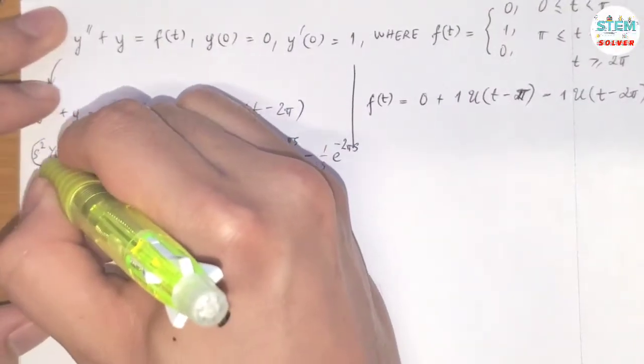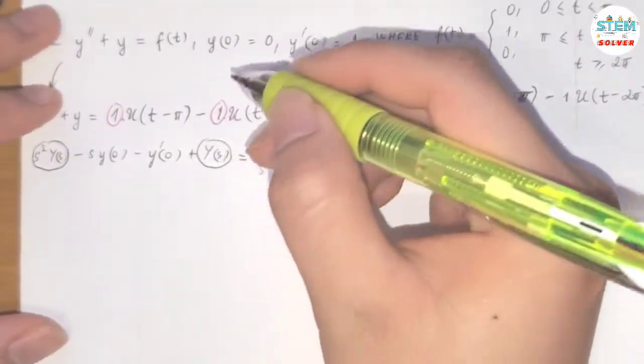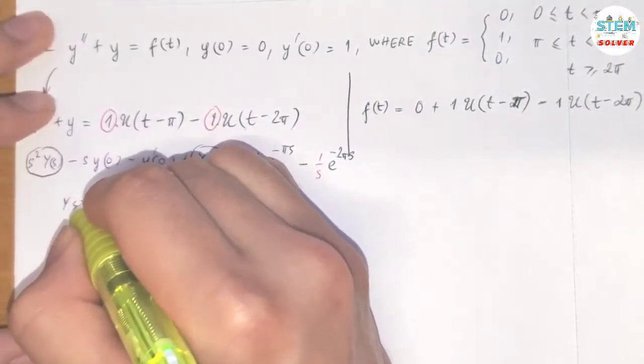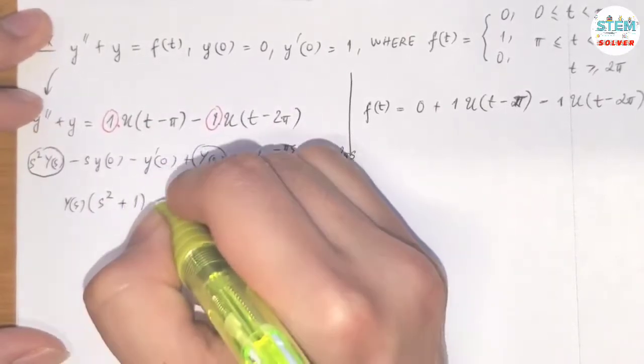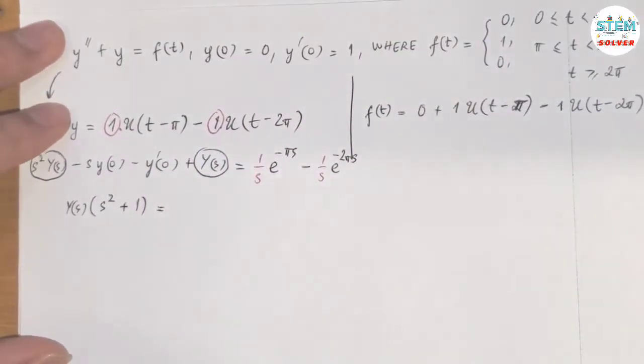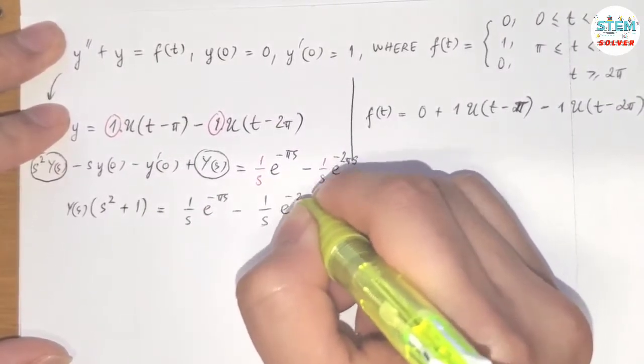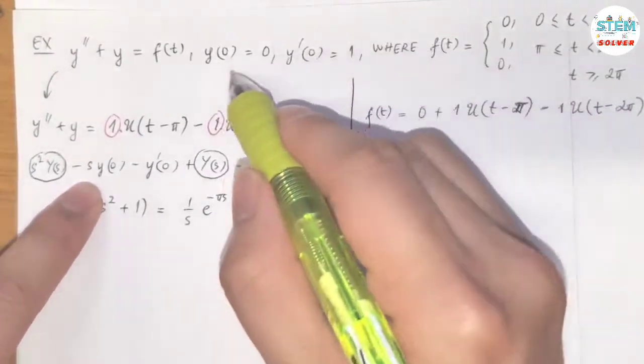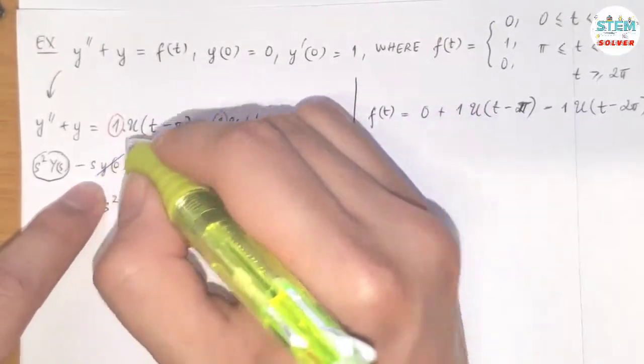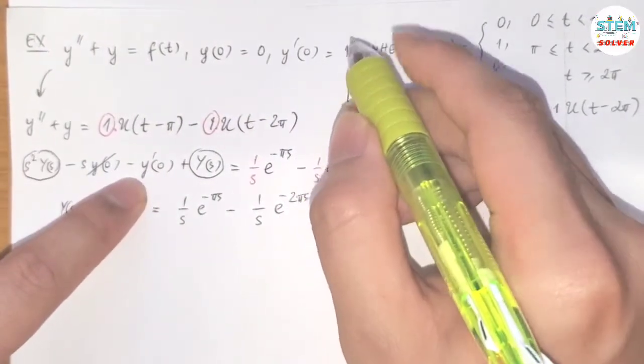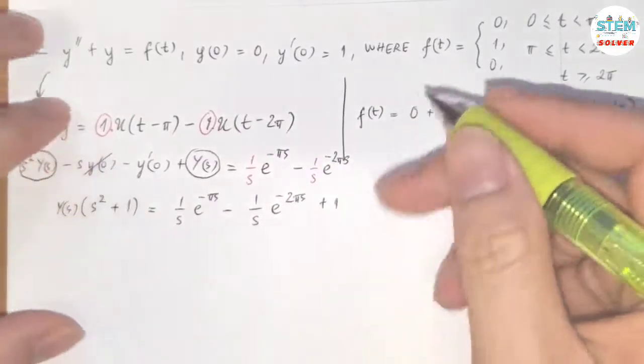Now let's take a look at the Y(s)'s and factor out Y(s). Then I have (s² + 1) in parentheses. On this side we have (1/s)e^(-πs) - (1/s)e^(-2πs). y(0) = 0 so this is gone, y'(0) = 1 so negative 1 moved to the other side which is positive 1.